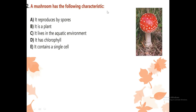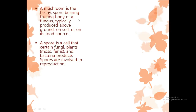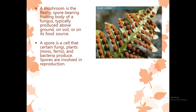A mushroom has the following characteristics. A mushroom is not a plant — it is a fungus. A mushroom is a fleshy, spore-bearing, fruiting body of a fungus, typically produced above ground, on soil or on its food source. You have seen mucor on bread and on rotten oranges. A spore is a cell; fungi, other plants like moss and fern, and bacteria also produce spores. Spores are involved in reproduction, as shown in the picture.